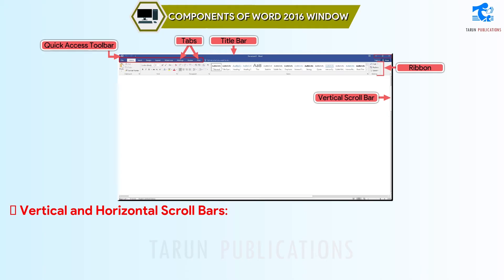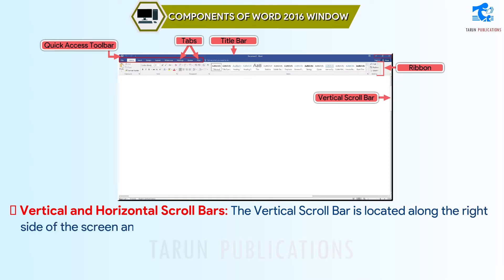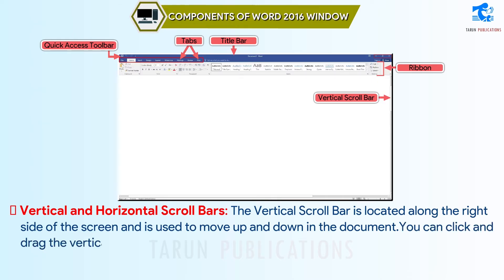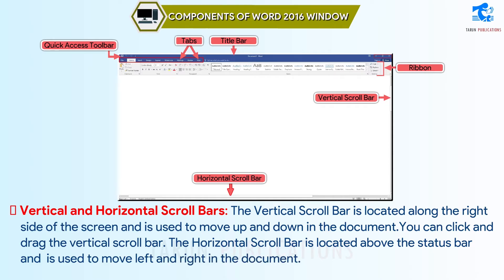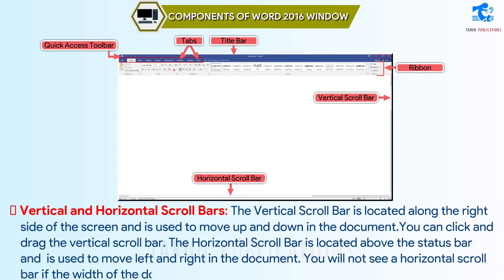Vertical and Horizontal Scroll Bars: the vertical scroll bar is located along the right side of the screen and is used to move up and down in the document. You can click and drag the vertical scroll bar. The horizontal scroll bar is located above the status bar and is used to move left and right in the document. You will not see a horizontal scroll bar if the width of the document fits on the screen.